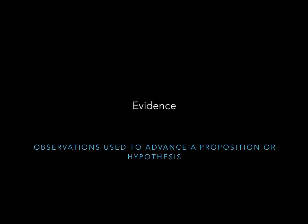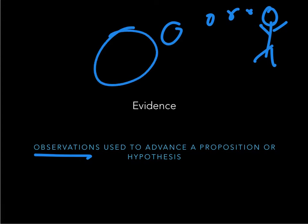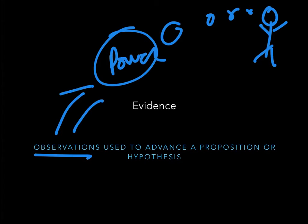Let's start with evidence. Evidence can mean a lot of things in the vernacular, the common sense. But what we mean is observation — things that we're looking at that are used to advance a hypothesis or proposition. Meaning we're looking at something about the world. We have a scientist who has thought carefully about some idea, and we want observations that give us evidence towards that idea. That is what evidence is fundamentally about in political science, or any science.